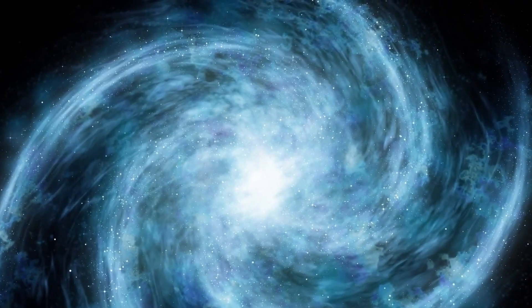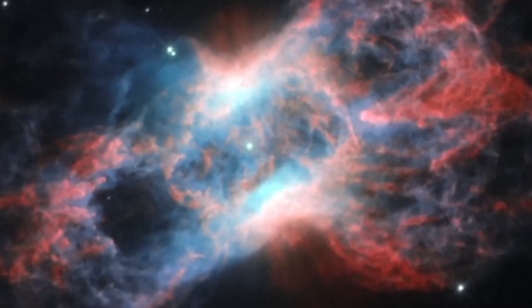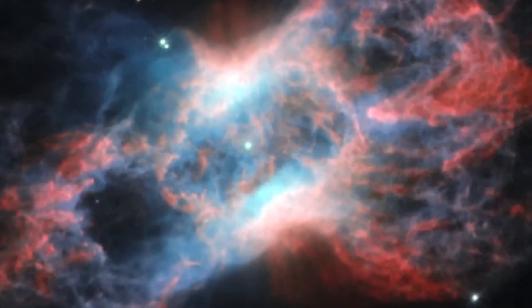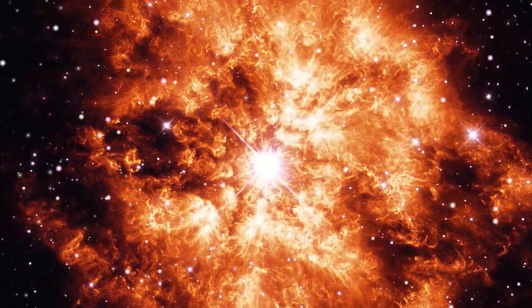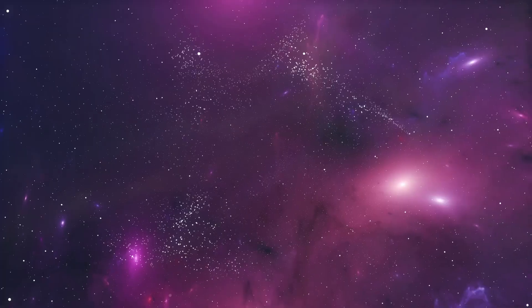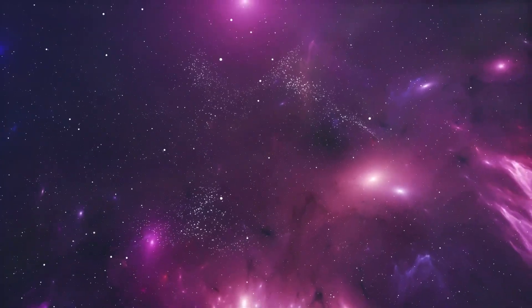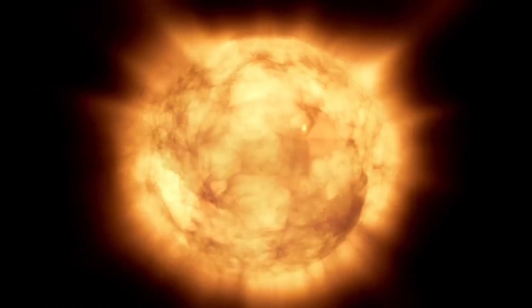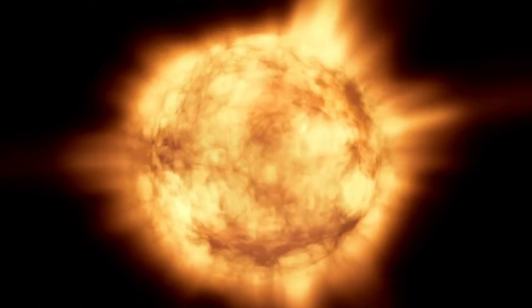Betelgeuse's unpredictable behavior has sparked discussions about the potential for an imminent supernova explosion. In a supernova, as the star consumes its remaining fuel, its core collapses, giving rise to a black hole while expelling outer layers at speeds of up to 25,000 kilometers per second.